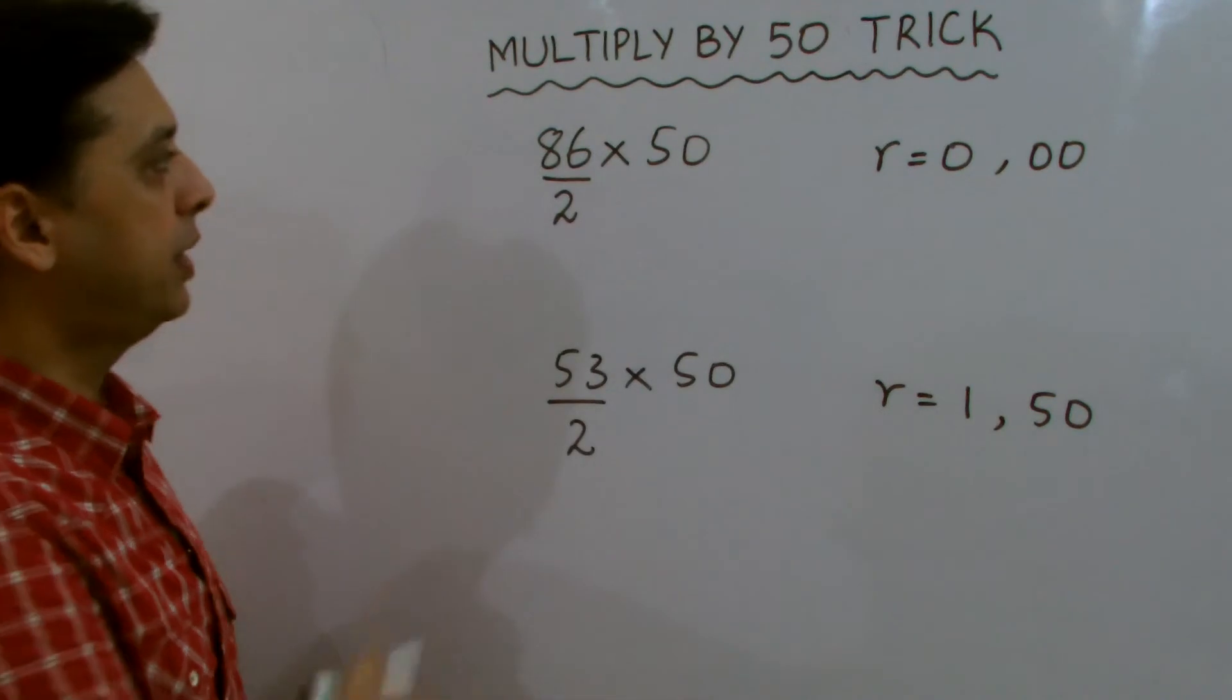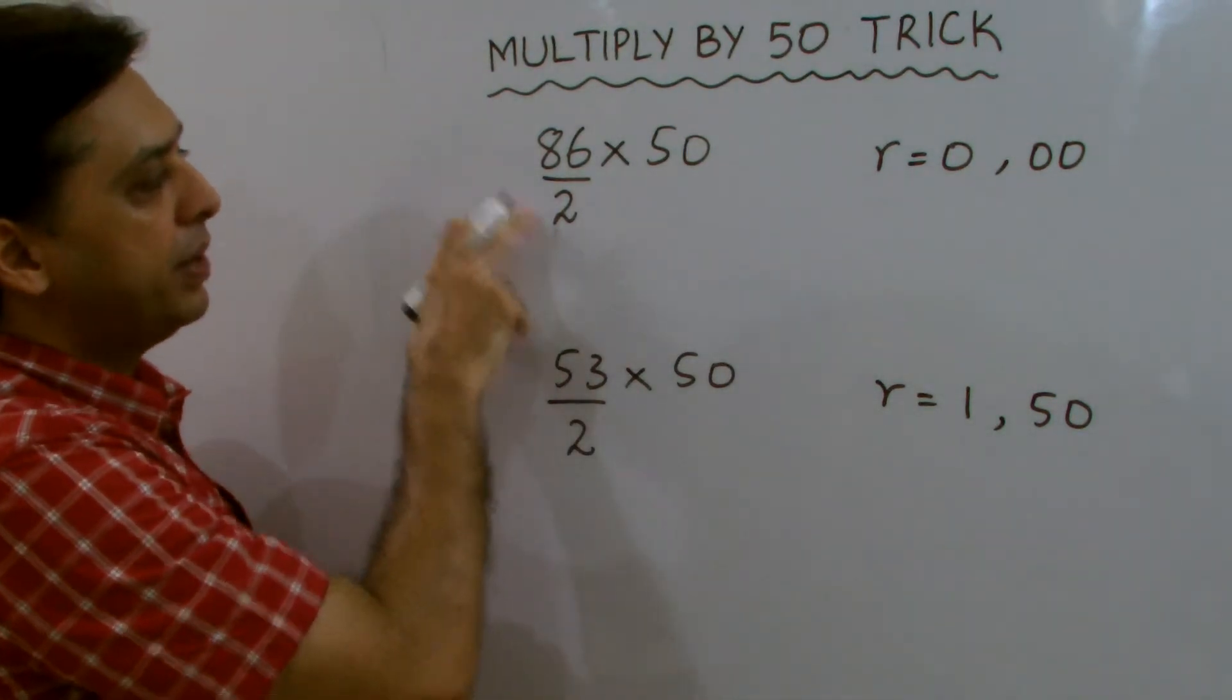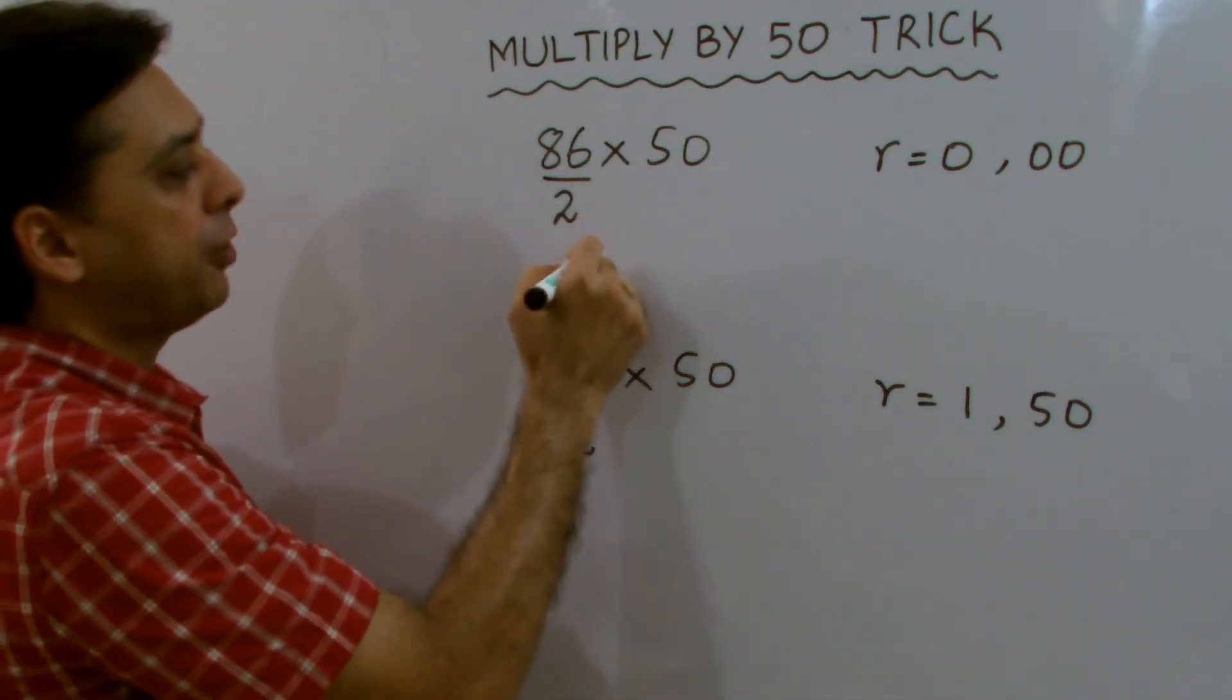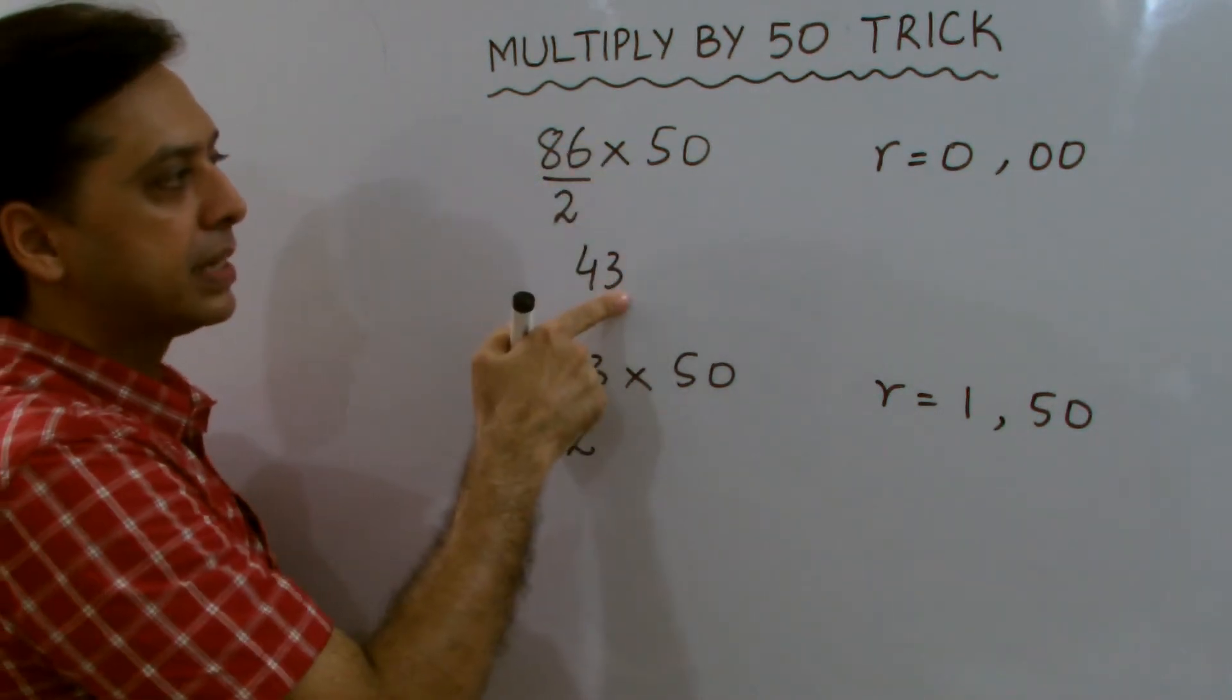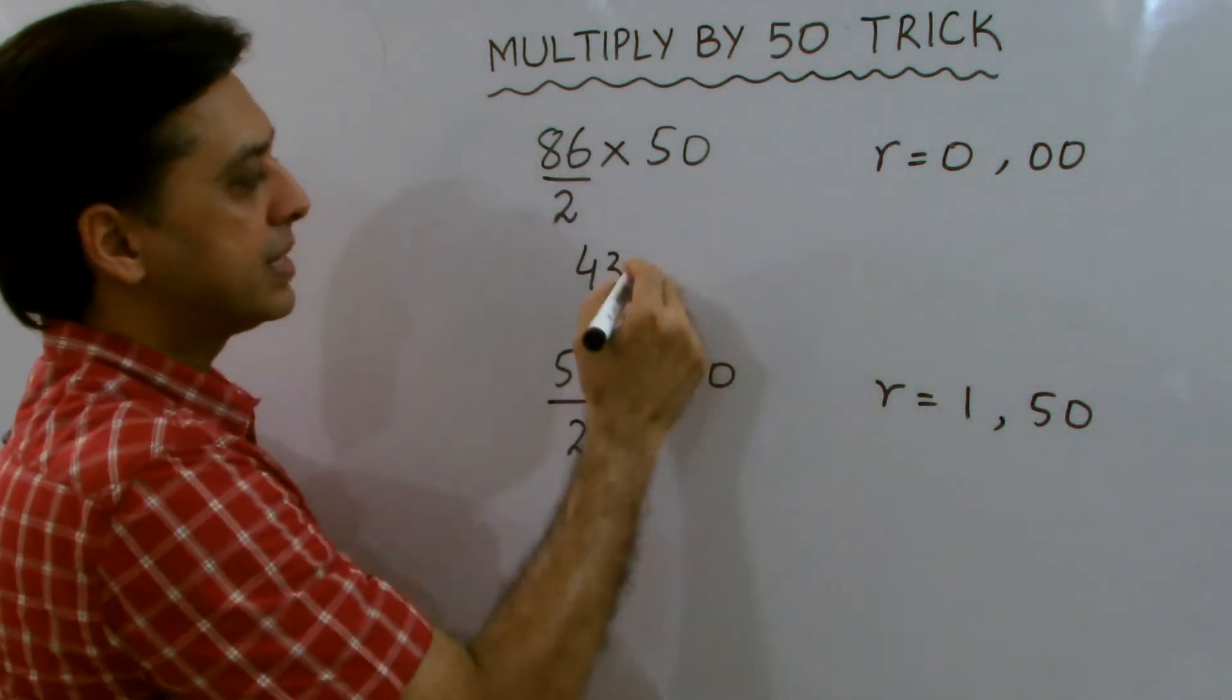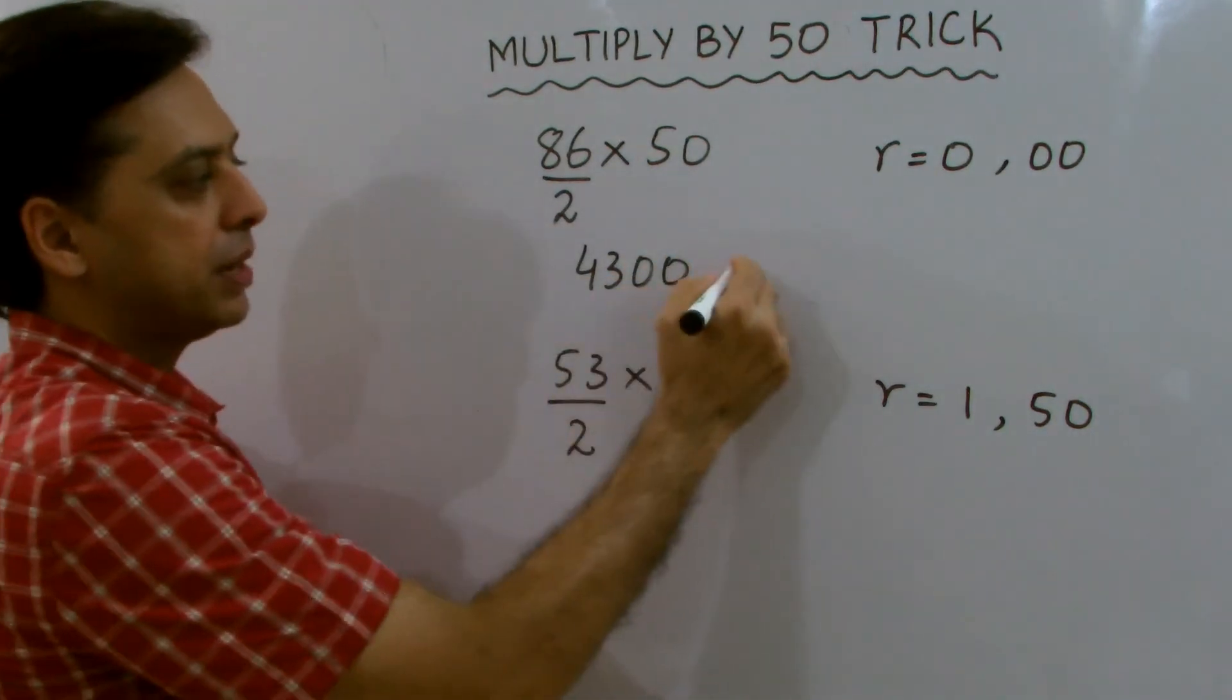What am I talking about? Let's have a look. When you divide 86 by 2, you get 43. 2 times 4 is 8, 2 times 3 is 6. As the remainder is 0, simply write two zeros, and that's your answer: 4300.